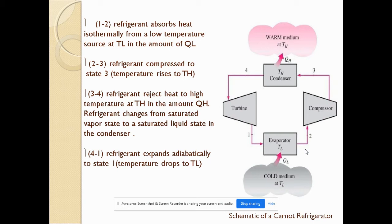The evaporator, compressor, condenser, and turbine are the basic components of a Carnot refrigerator. There are four processes: process 1 to 2 is the absorption of heat from the cold medium at temperature TL in the amount of QL; process 2 to 3 is a compression process which raises the temperature to TH; and process 3 to 4 is the rejection process where heat at TH is rejected in the amount of QH.